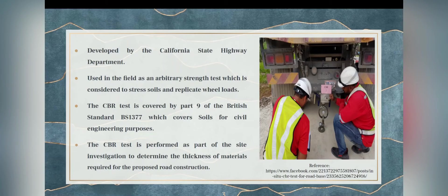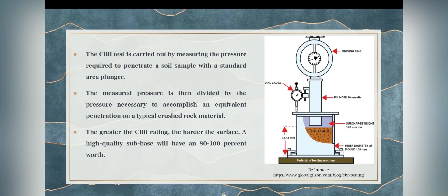BS 1377 covers soils for civil engineering purposes. The CBR test is performed as part of site investigation to determine the thickness of materials required for proposed road construction. The test is carried out by measuring the pressure required to penetrate a soil sample with a standard area plunger. The measured pressure is then divided by the pressure necessary to accomplish an equivalent penetration on a typical crushed road material. The greater the CBR rating, the harder the surface. A high-quality sub-base will have an approximate 80 to 100 percent value.